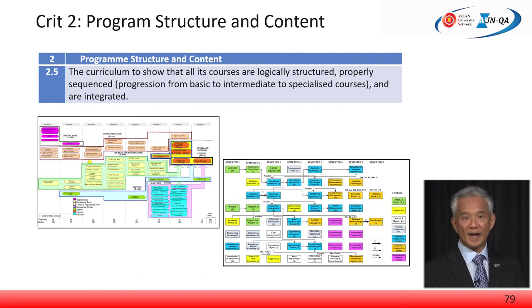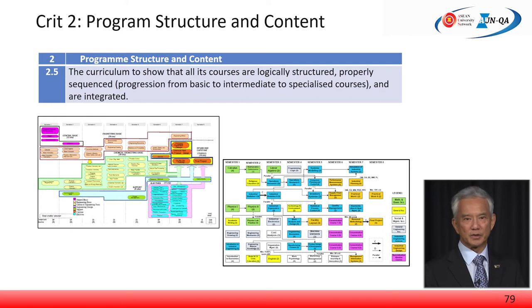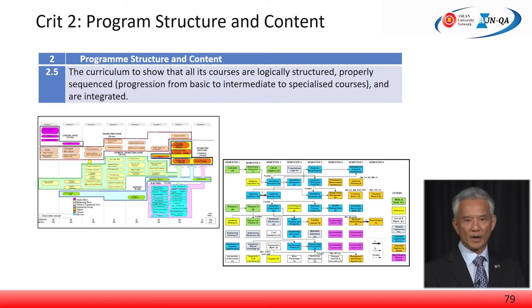Requirement 2.5 references the other important map to produce, which is the curriculum map. Note the graphical representation, the routes or learning options available to students, the journey to fulfil, and the sense of knowing what is in store for a four-year programme through seeing the map in one page, one view.